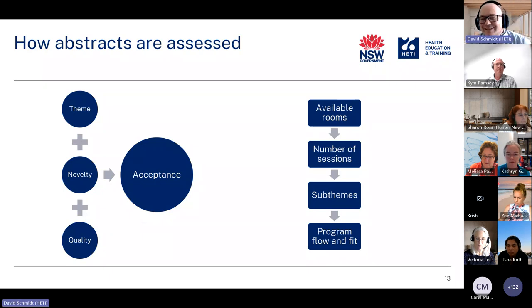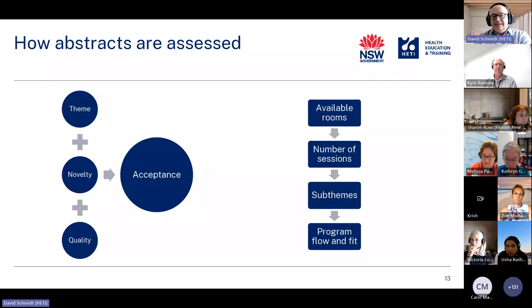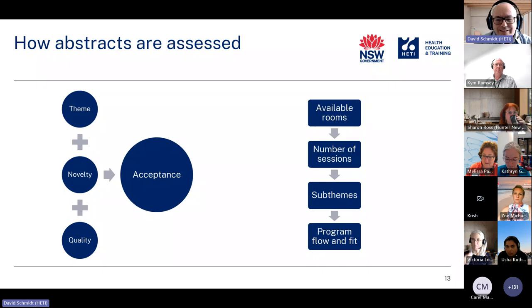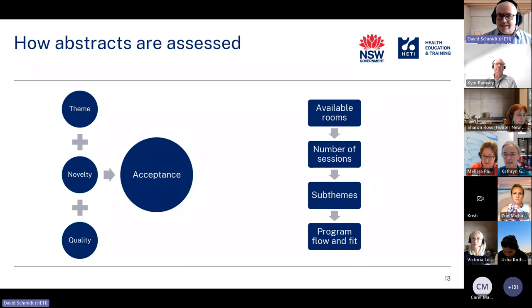There's also the issue of how big the conference is, how many rooms they have, how many sessions they're running, and whether they have particular sub-themes they want represented. Once everything is filtered through all of that, the program is written — all those jigsaw pieces fitted together to bring the conference together. It starts with does it fit the conference theme, then is it new, is it good, and does it fit with everything else on the program? If it does all of that, then it's a yes.